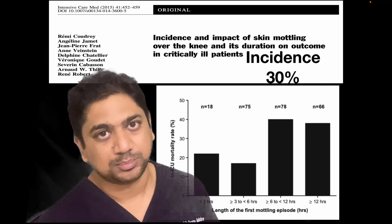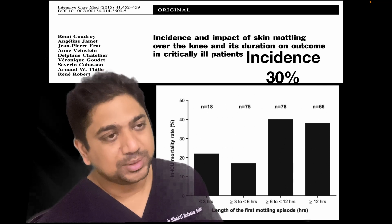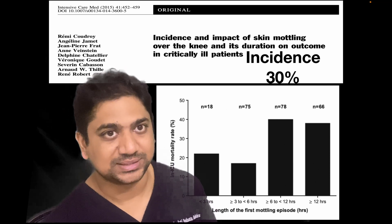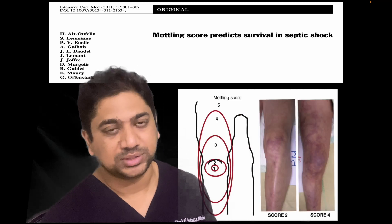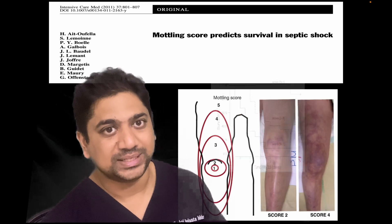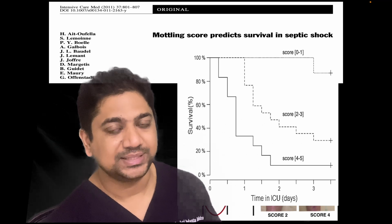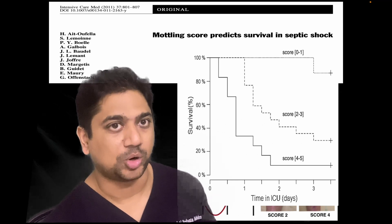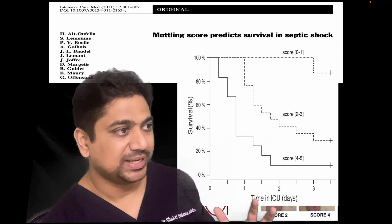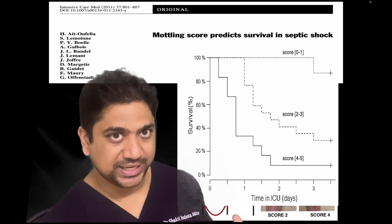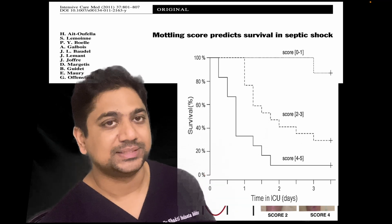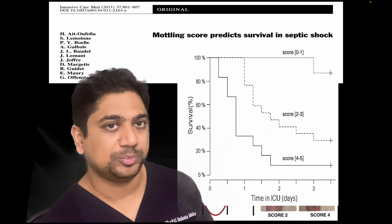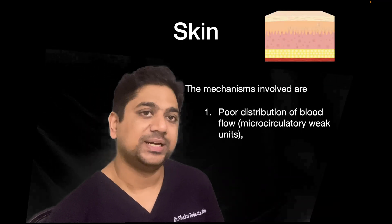Mottling is common in the ICU, seen in 30% of septic patients. If mottling persists for more than six hours, it is associated with very high mortality. A mottling score assessed around the knee — studied in the literature — showed that as the score increased, mortality rates also increased. Mottling for longer duration and over a larger area is associated with worse outcomes and definitely indicates hemodynamic compromise that should be treated early.